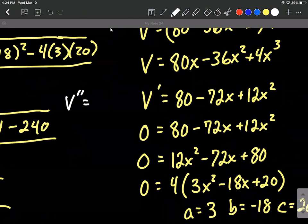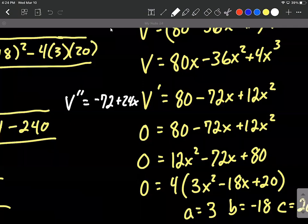So the second derivative, again, just using the power rule, it's going to be negative 72 plus 24x. Power rule repeatedly. And the derivative of 80, a constant, is just going to be zero.